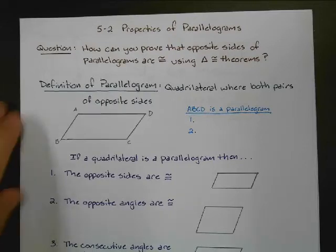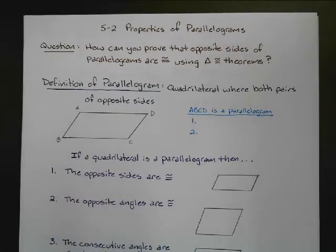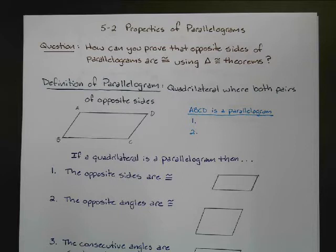Hi, welcome back, my Math 2 people. We've got 5-2 properties of parallelograms. We're going to continue with polygons and get specifically into quadrilaterals pretty much from here to the end of the unit, so we're just going to look at four-sided shapes.